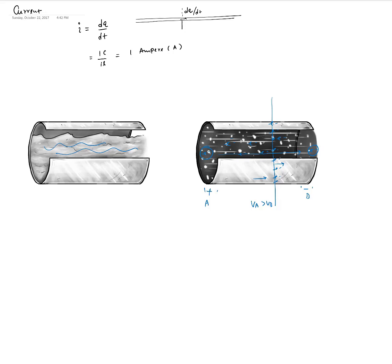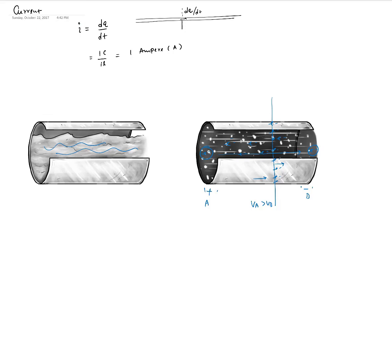For one ampere of current, we can calculate how many electrons pass through a cross section. One ampere equals one coulomb per second. Since the charge on an individual electron is 1.6 times 10 to the power minus 19 coulombs, to get one coulomb of total charge you need approximately 0.5 times 10 to the 19 — or about 10 to the power 18 — electrons. That is a very large number, but they are available even in a small cross-sectional area.